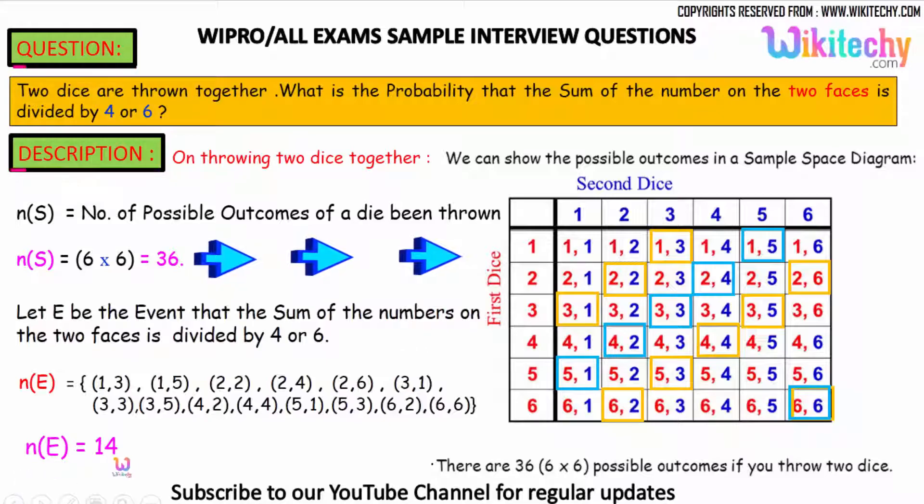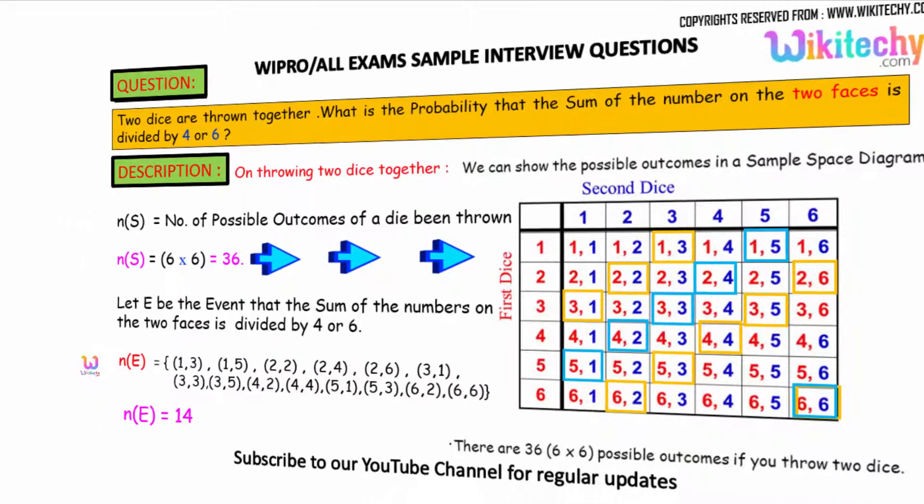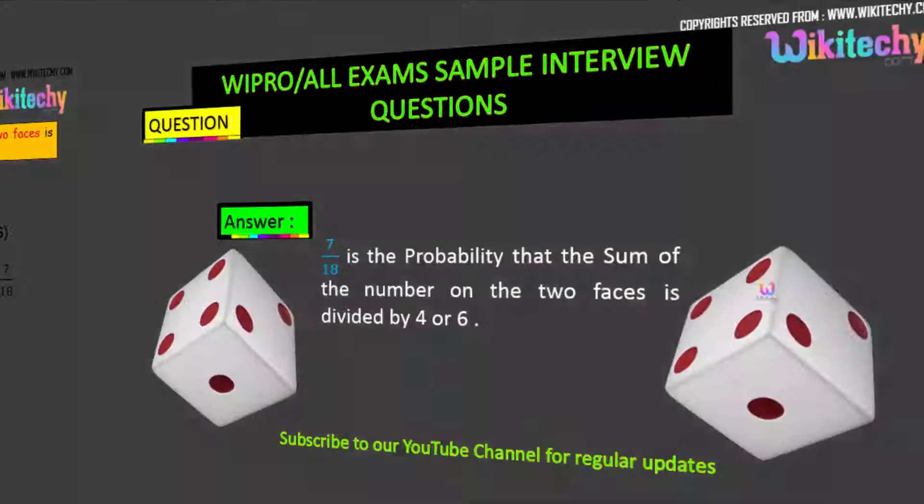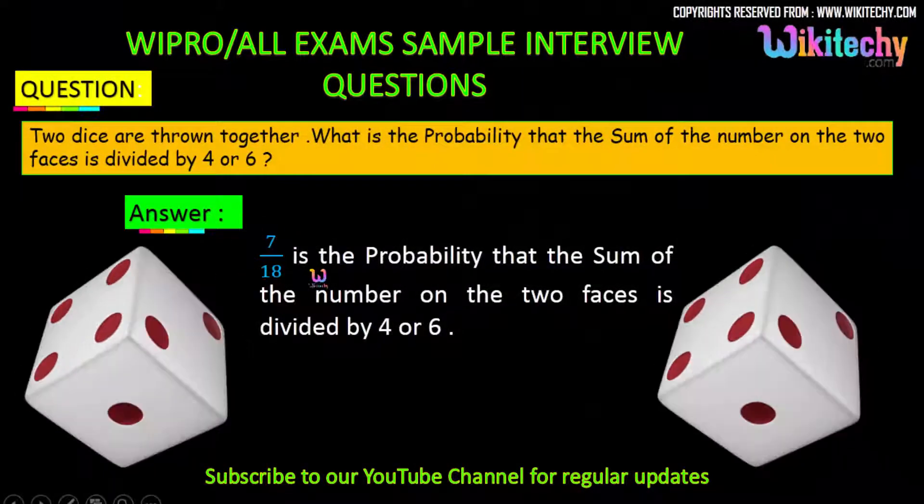The probability P(E) equals n(E) divided by n(S). So 14 divided by 36 gives us 7/18. The probability that the sum of the numbers on the two faces is divisible by 4 or 6 is 7/18. That is the answer.